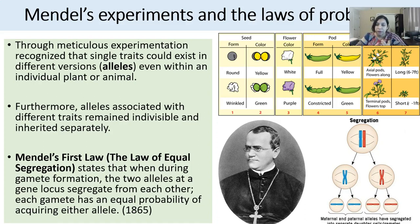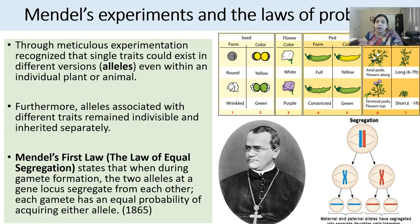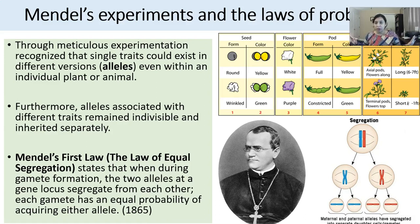Through his experiments, Mendel recognized that individual traits could exist in different flavors or versions — what we now know as alleles — within an animal or plant, and that these different versions of a trait can be passed on to progeny in a very particular way. He was able to show that alleles associated with different traits typically remain indivisible and are inherited separately from each other. So it's not that blue eyes will always come with blonde hair — it could be a mix of the two as well.